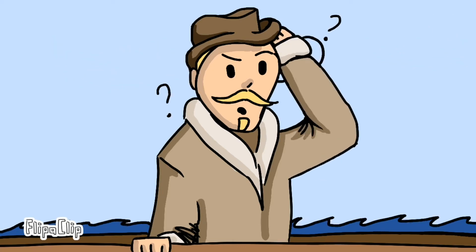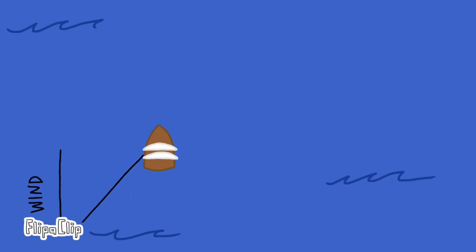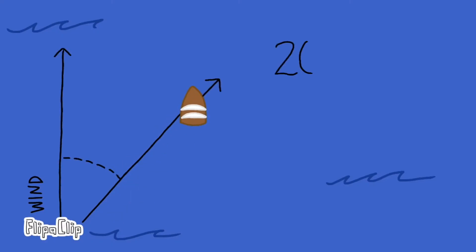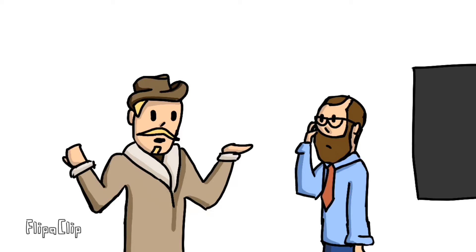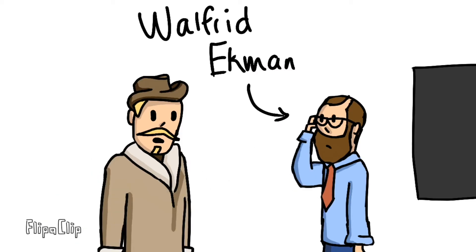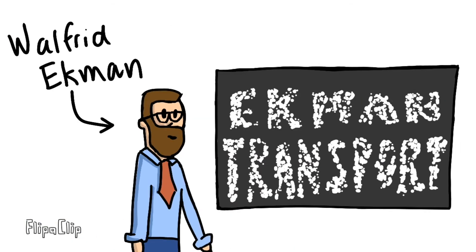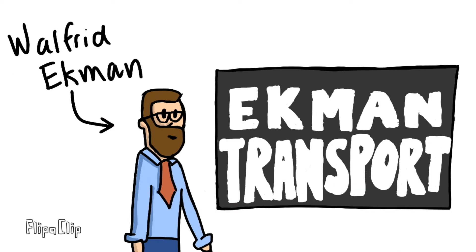In 1893, Fritjof Nansen noticed that his ship would constantly drift 20 to 40 degrees to the right of the wind direction. He told his friend Ekman about it, and he came up with what's called Ekman Transport. So how does it work? Why couldn't the ship just move in the same direction as the wind?